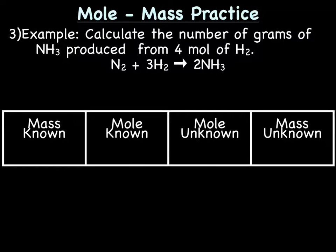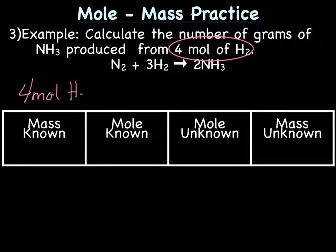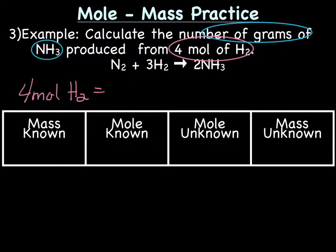Let's do a practice problem. Calculate the number of grams of NH3, or ammonia, produced from 4 moles of hydrogen, given a balanced equation. Our first step is always to write the question as a math problem. We know we have 4 moles of H2, so that's our known. We're looking for the number of grams of NH3, so that's our unknown.